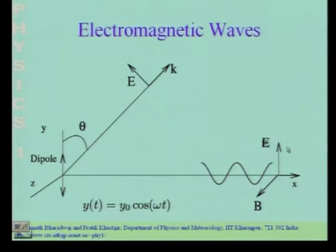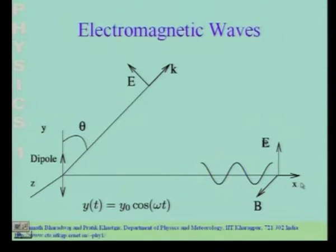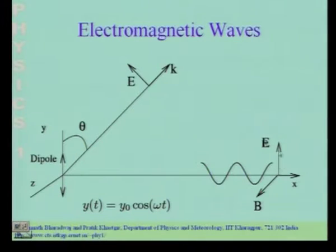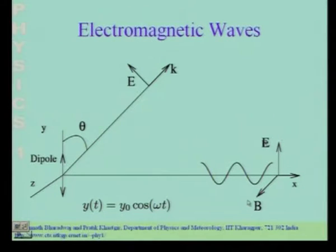There is also going to be a magnetic field, and the magnetic field is perpendicular to both the direction of propagation of this wave and the electric field. The magnetic field also oscillates at the same phase as the electric field. This is what we refer to as an electromagnetic wave — the electric field and magnetic field both mutually perpendicular, oscillating in phase, and both perpendicular to the direction in which the wave propagates.